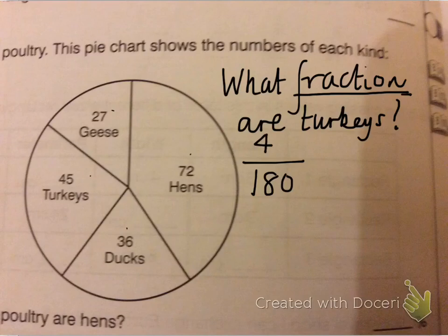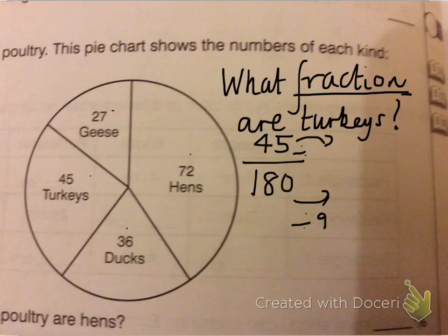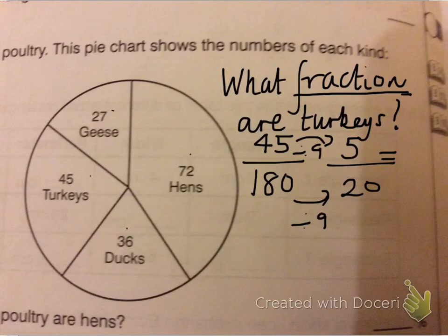Here we don't have to convert it into a percentage — it's a fraction instead. That would be a valid answer but it can be simplified. We can divide the top and the bottom by 9, as we did just now, giving us 20 on the bottom and 5 on the top. We can simplify again — the top and bottom are both in the 5 times table, so dividing by 5 top and bottom gives us 1 over 4, or one quarter.